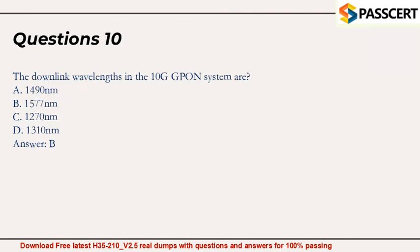Question 10. The downlink wavelengths in the 10G GPON system are? A. 1490 nm. B. 1577 nm. C. 1270 nm. D. 1310 nm. Answer: B.